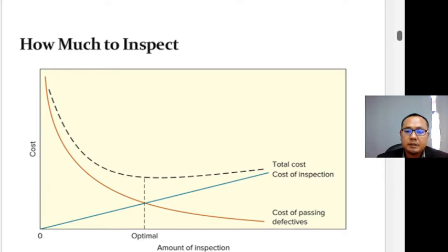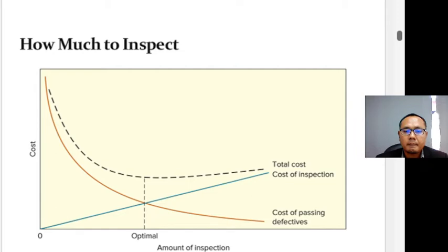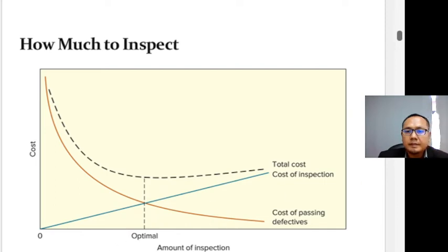Consider inspection at intermediate stages in the manufacture of personal computers. Because inspection costs are often significant, questions arise about whether one needs to inspect every computer or whether a small sample will suffice. As illustrated in the diagram, as inspection activities increase, inspection cost increases, but the cost of undetected defects decreases.